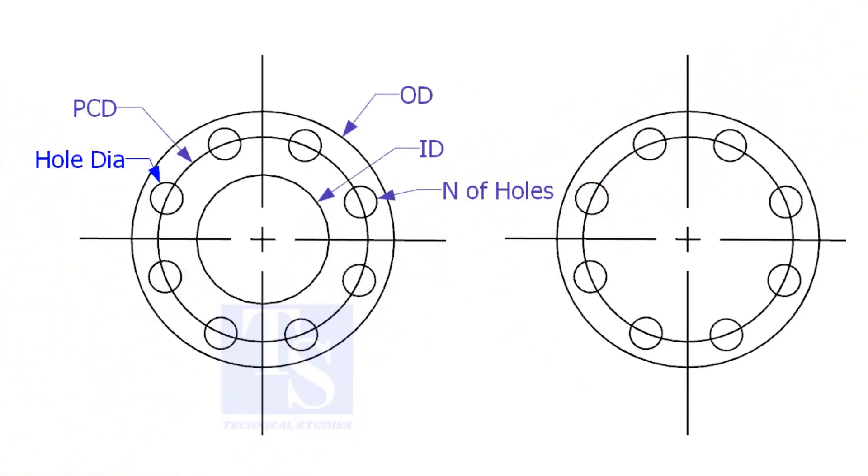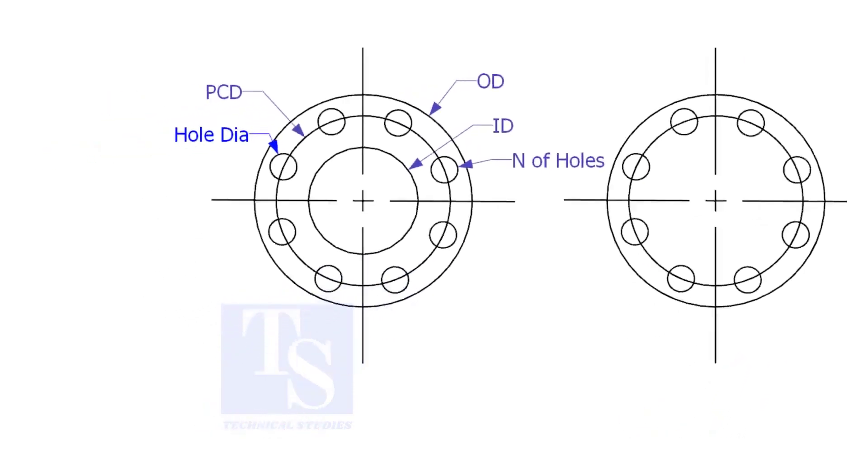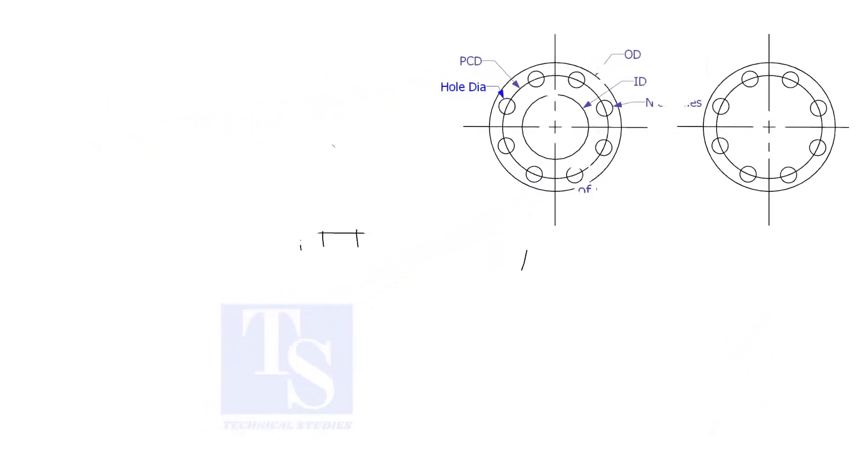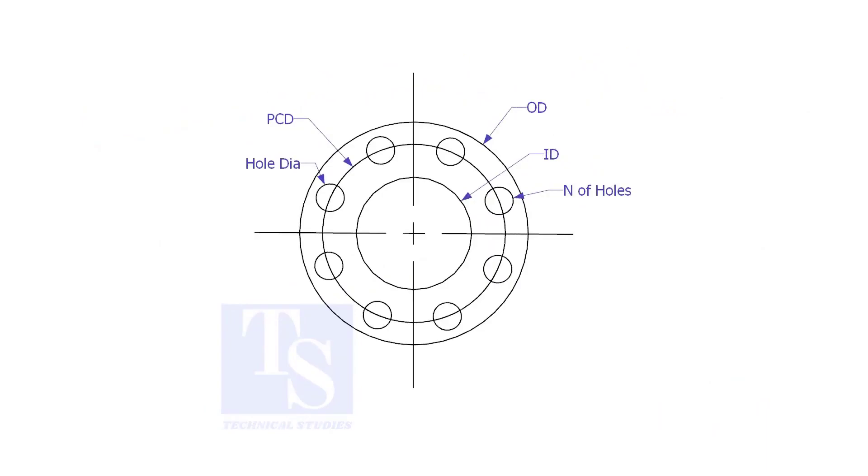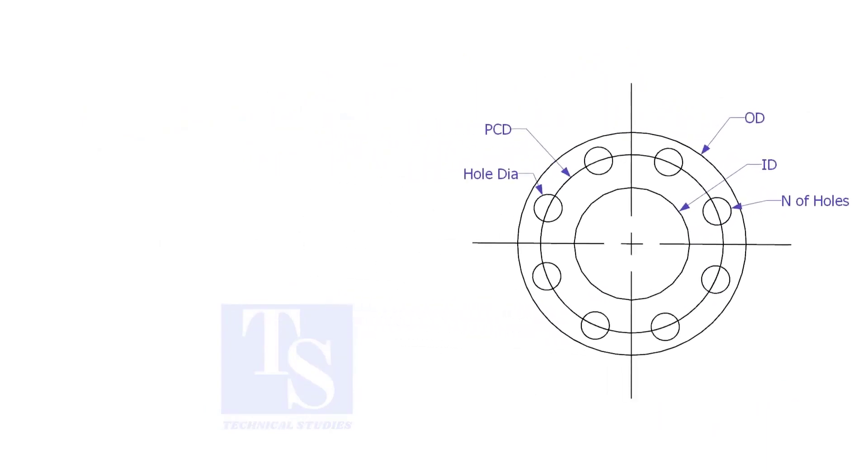There are two types of plate flanges: open and blind. To make a plate flange, we need to know the following things.